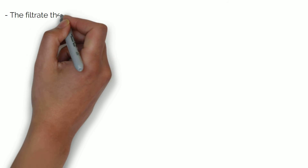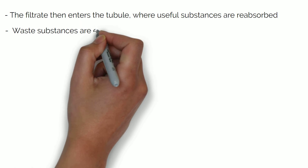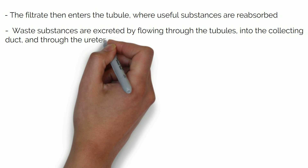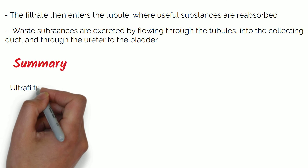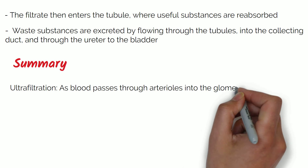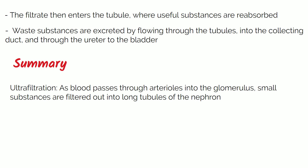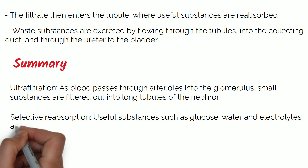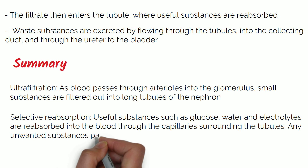After the glomerulus, the filtrate enters the tubule where useful substances are reabsorbed. Waste substances are excreted by flowing through the tubules into the collecting duct and through the ureter to the bladder. To summarise: the kidneys excrete waste substances and regulate blood water potential — waste substances are filtered into long tubules of the nephron, useful substances such as glucose, water and electrolytes are reabsorbed into the blood through capillaries surrounding the tubules, and any unwanted substances pass through to the bladder for excretion.